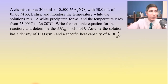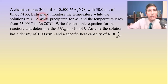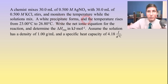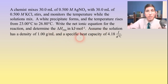Now let's try another problem — this will be the last one, but it's a lengthy one. A chemist mixes 30.0 milliliters of 0.5 molar silver nitrate with 30 milliliters of 0.5 molar potassium chloride, stirs, and monitors the temperature while the solutions mix. A white precipitate forms, and the temperature rises from 23 degrees Celsius to 26.80 degrees Celsius. Write the net ionic equation for the reaction and determine the delta H for the reaction in kilojoules per mole. Assume the solution has a density of 1 gram per milliliter and a specific heat capacity of 4.18 joules per gram degree Celsius.